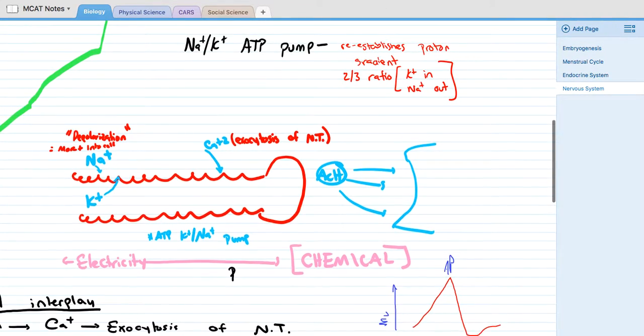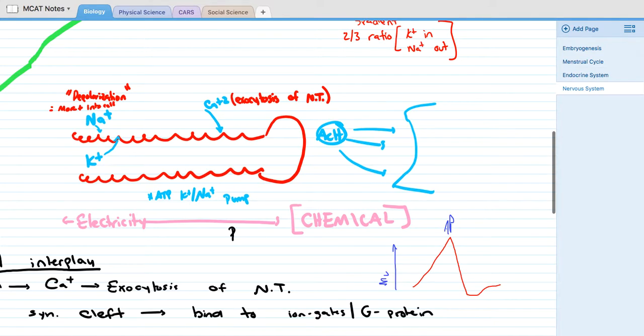This is usually where you have a refractory period. In order to re-stabilize this membrane, you're going to use ATP and potassium and sodium pumps. This is a 2 to 3 ratio in order to make sure that more sodium is pumped out, more positive ions are pumped out than are put into the cell. Basically re-establishment of sodium out and potassium in.